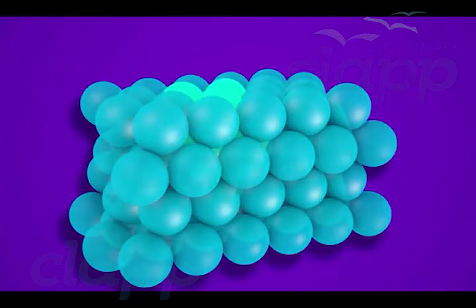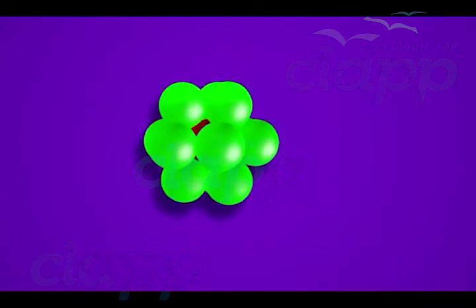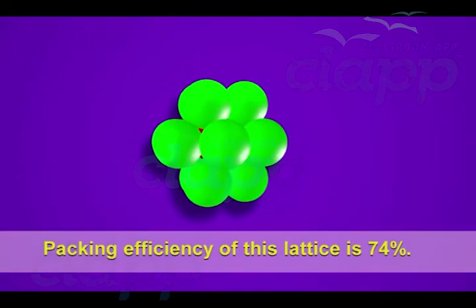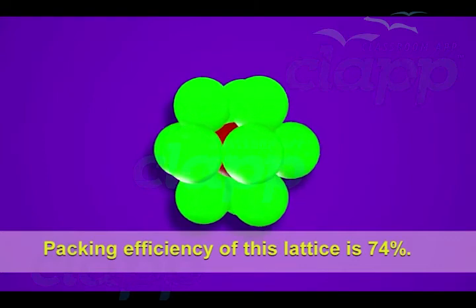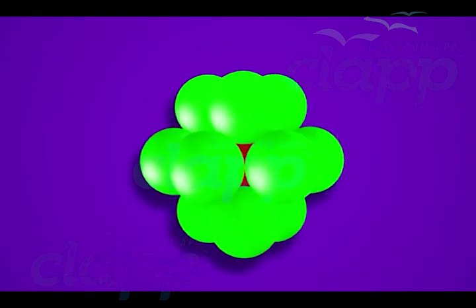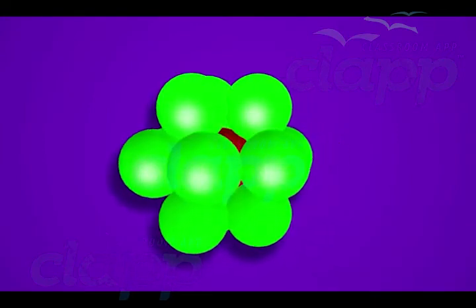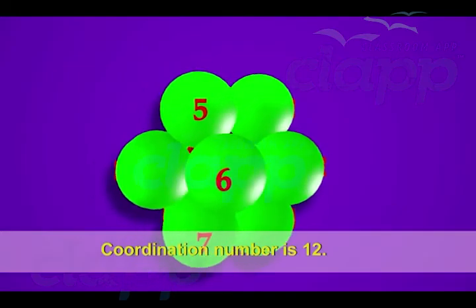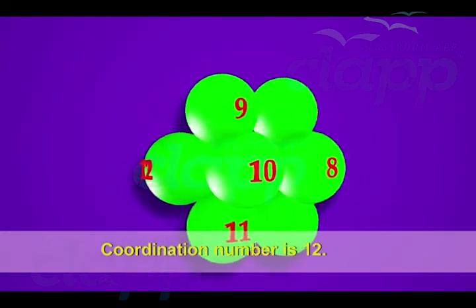This type of packing is very efficient because of the very less space between the spheres, making the packing efficiency of this lattice 74%. Each sphere is in contact with the 12 nearest atoms, so the coordination number is 12.